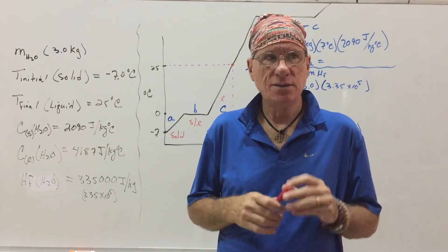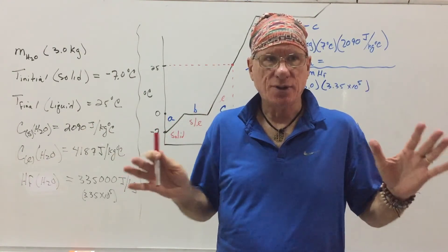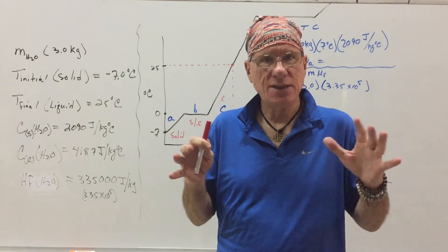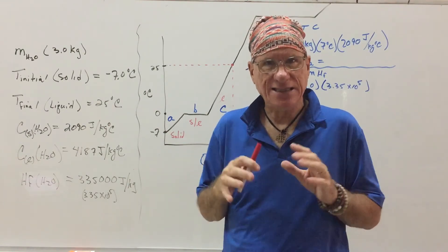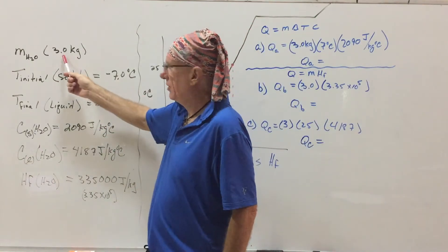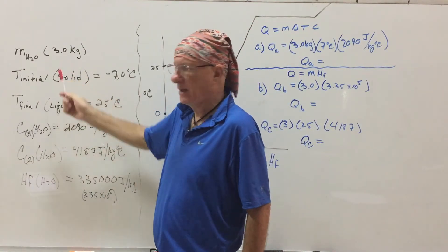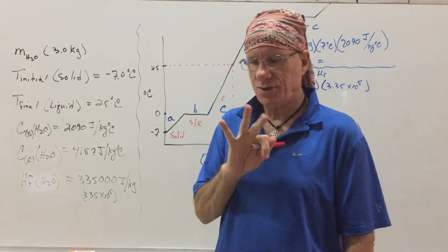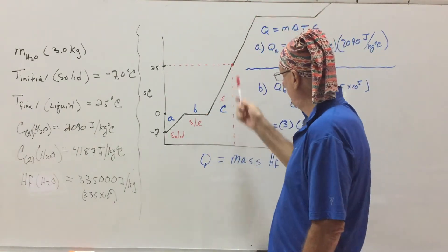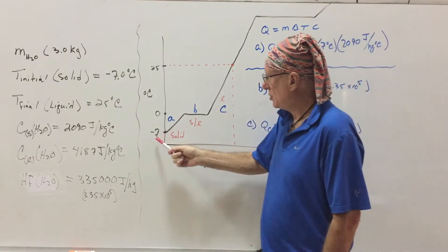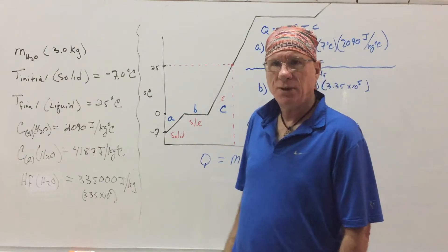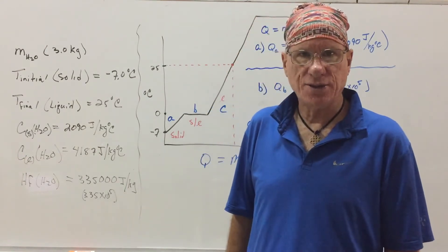In this case, the outside temperature is negative 7 degrees Celsius. It's ice, so that's the temperature of the ice. I have 3 kilograms of ice. Now, this problem is in three parts. Here's the graph. So I'm starting at negative 7. It's going to heat up to zero degrees Celsius.